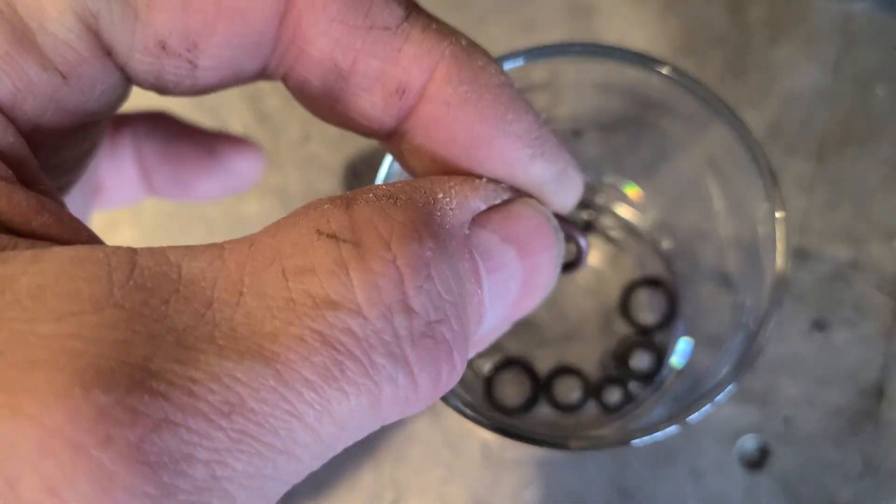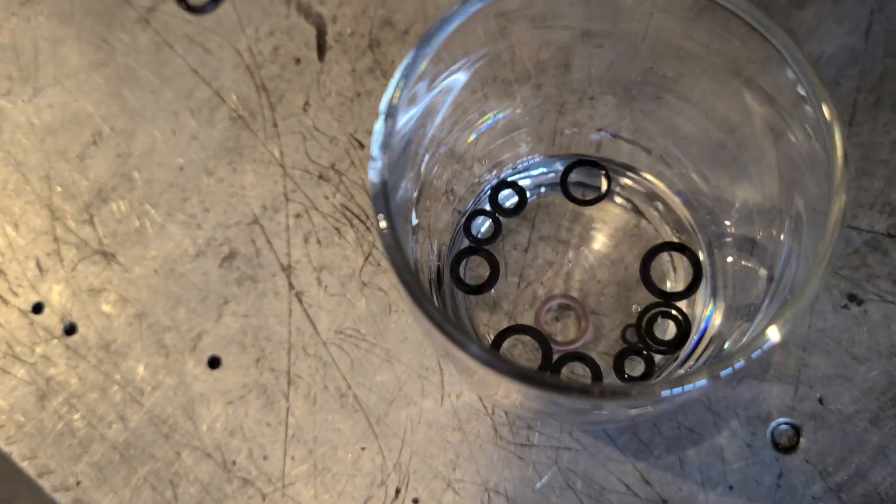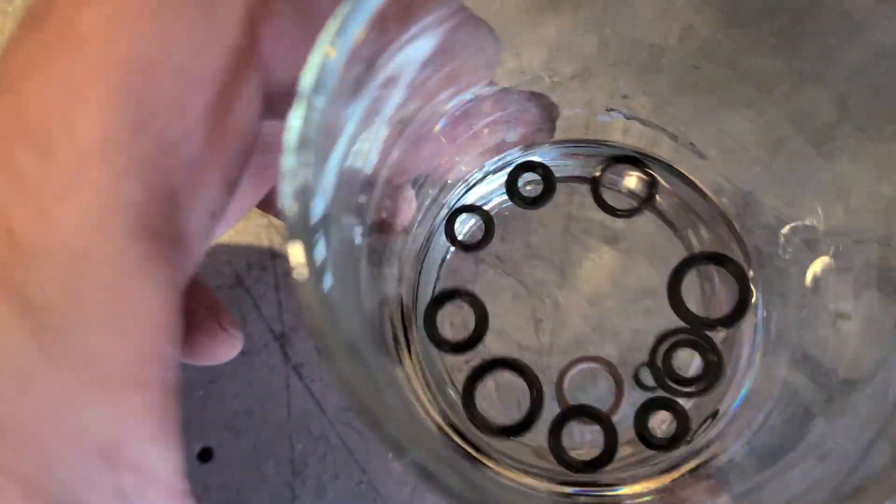Here's the Viton O-ring from the kit, and you'll see it sinks right down at the bottom. The other O-rings are all floating up at the top.